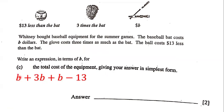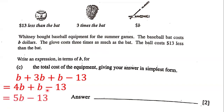So we have the cost of the bat which is B, the cost of the glove which is 3B, and the cost of the ball which is B minus 13. B plus 3B is 4B. Then 4B plus B is 5B, so we bring down the negative 13, giving us 5B minus 13. Notice that 5B and minus 13 are unlike terms and cannot be simplified further. So the total cost of the equipment in simplest form is 5B minus 13.